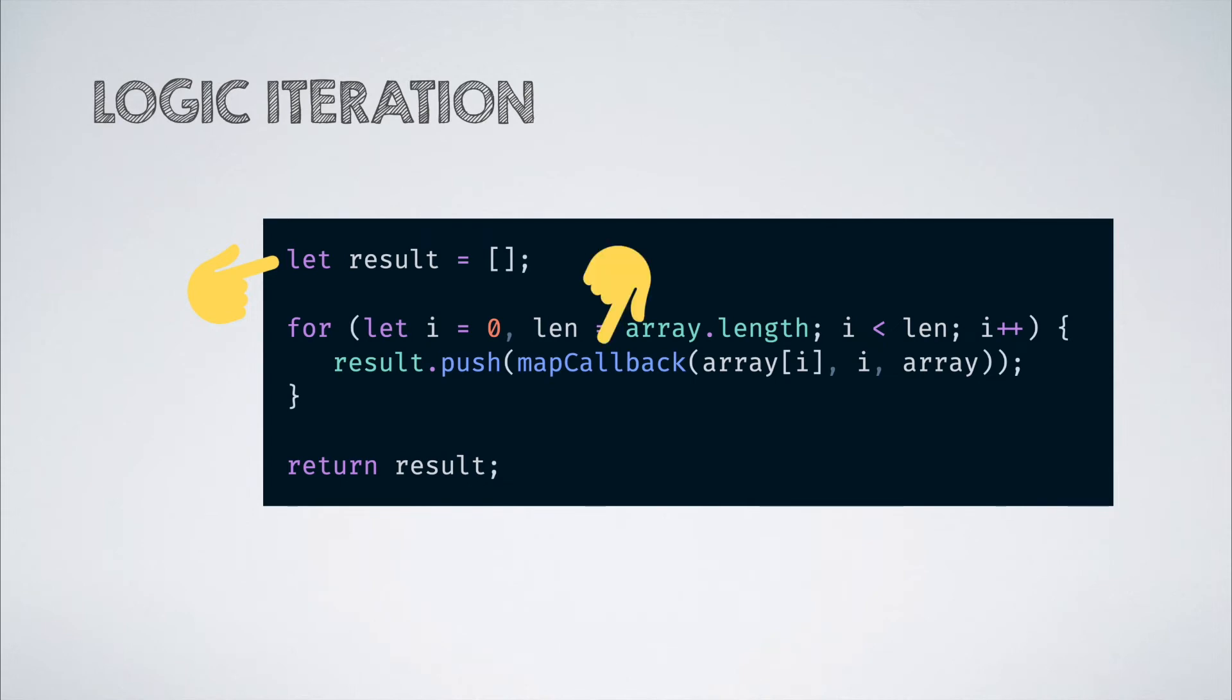We then iterate over the entire input array from index 0 to the last index. Then we run the callback function and pass it three things exactly as the original map method: the array element, its index, and the entire original array. We also push the result of this callback function for every element into the result array and finally return the result array.